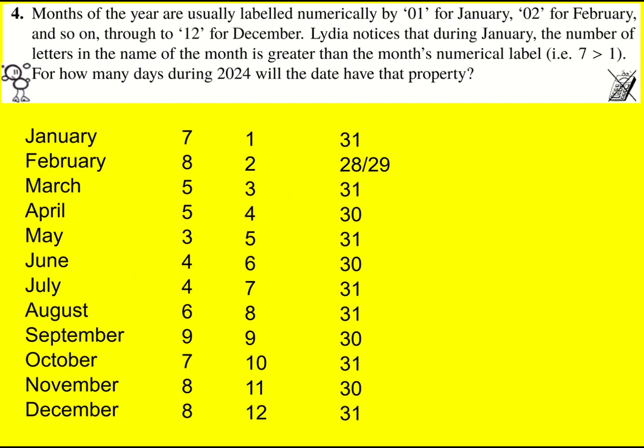We're told that Lydia notices that during January the number of letters in the name is greater than the month's numerical label — 7 is greater than 1. So she's keeping track of how many days there are with this property. So 31 is in there.